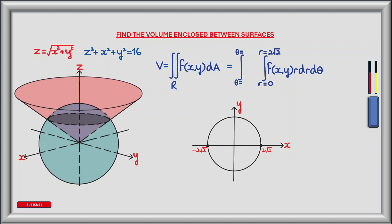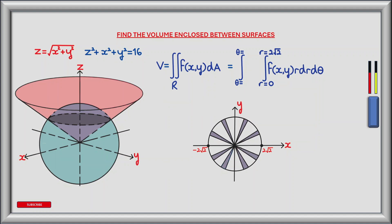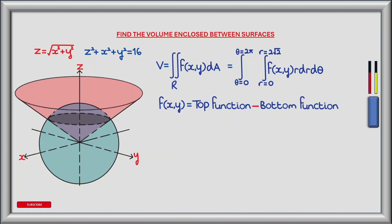As r rotates about theta across region R, it begins at theta equals zero and advances 360 degrees or 2 pi radians around the circle. Each sector represents an angle of d theta, and by summing each of the infinitesimally small sectors we get our total volume. We integrate beginning at theta equals zero and ending at theta equals 2 pi radians. The lower limit of the outer integral is theta equals zero and the upper limit is theta equals 2 pi.